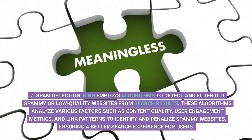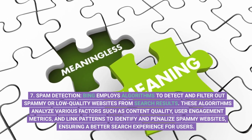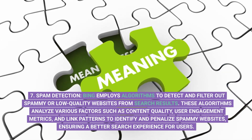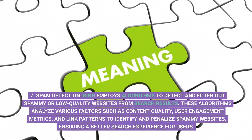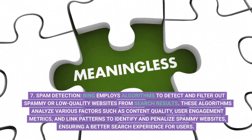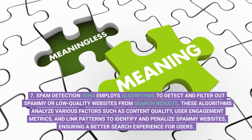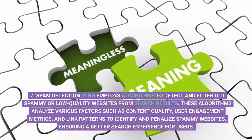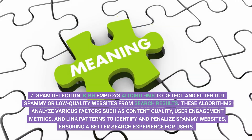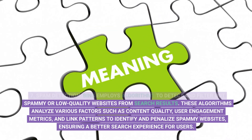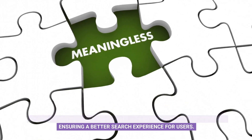7. Spam Detection. Bing employs algorithms to detect and filter out spammy or low-quality websites from search results. These algorithms analyze various factors such as content quality, user engagement metrics, and link patterns to identify and penalize spammy websites, ensuring a better search experience for users.